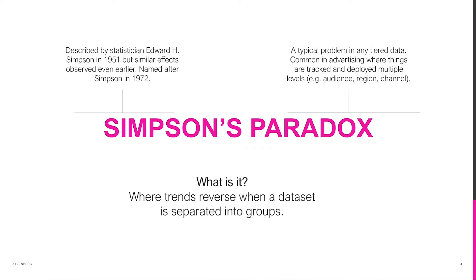It's a typical problem that we observe in any tiered data. It's common in advertising where things are tracked and deployed at multiple levels — for example, multiple audiences within a campaign, regions, or channels.